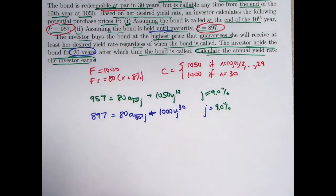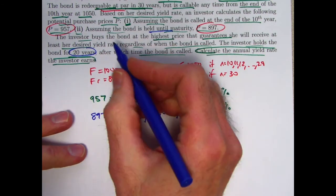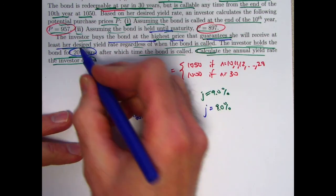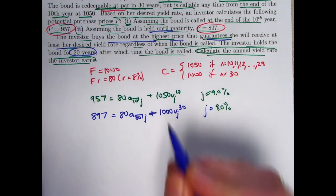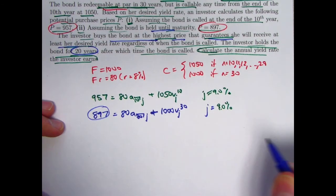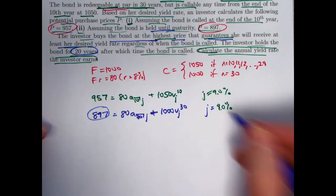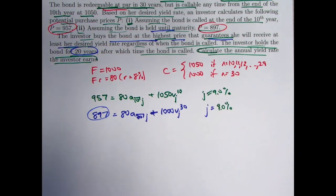So, we are assuming she buys the bond at the highest price that guarantees she's going to get her at least desired yield of 9%, meaning we want to assume she buys the bond for 897.